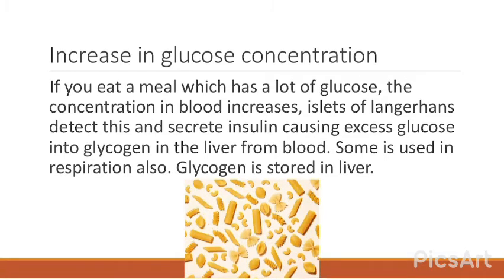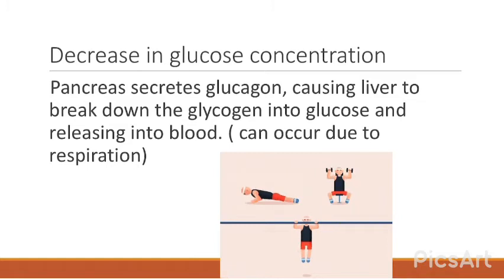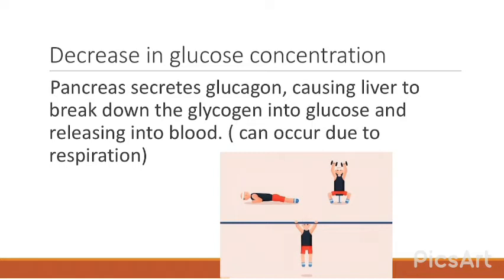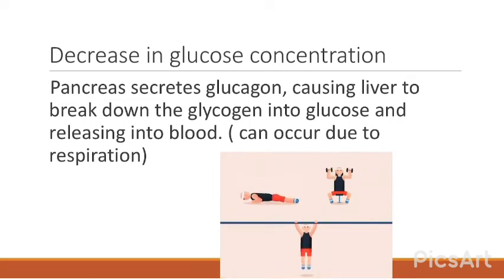After a meal with lots of glucose, blood glucose concentration rises. The islets of Langerhans detect this and secrete insulin, causing excess glucose to be converted into glycogen stored in the liver; some glucose is also used in respiration. If glucose concentration decreases — due to exercise or respiration — the pancreas secretes glucagon, causing the liver to break down glycogen back into glucose and release it into the blood. Note: glycogen is a polysaccharide, while glucagon is a hormone.